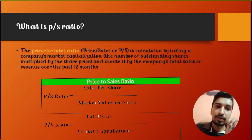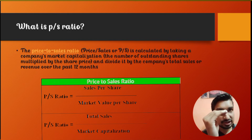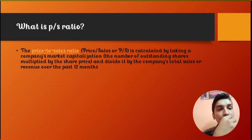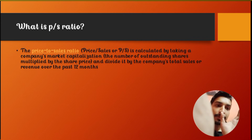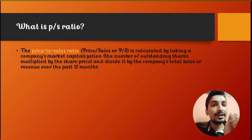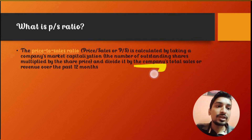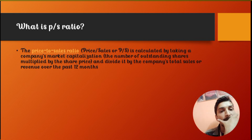The price to sales ratio tells you the sales per share divided by the price per share — basically the price you are paying and the sales you are getting for that price. If the market capitalization is small but the number of sales the company has made is large, the company is more attractive. A smaller company with big sales means the denominator is large and the ratio is low.